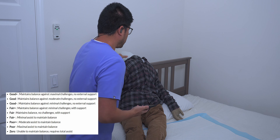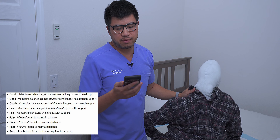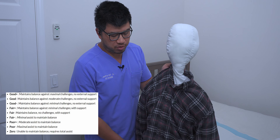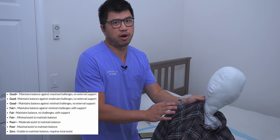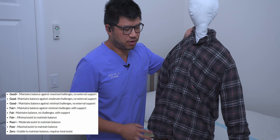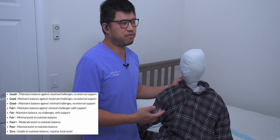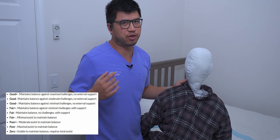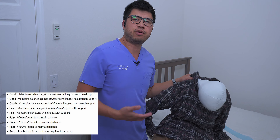I'm going to demonstrate with my dummy for sitting balance. For Good+, I can push them with a maximal level of force and they maintain it without falling over. That also applies for sitting and standing — when I do evaluations I start in sitting then go into standing. Good is moderate force, and Good- is like a minimal nudge — they're not going to fall over at that level.